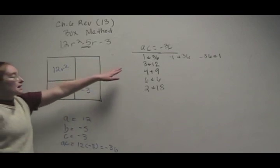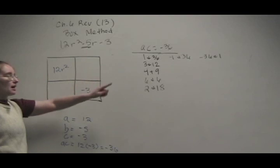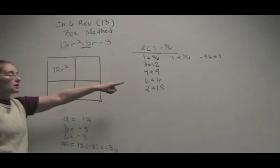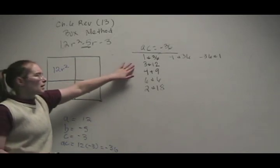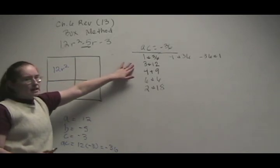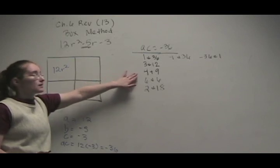So, if we add negative 1 plus 36, we get 35. It's not negative 5. Negative 36 and 1, negative 35. Again, not 5. So we're going to go down these. 3 and 12, we can see those are going to be 9s. It's not going to work. 4 and 9 is going to give us a 5.